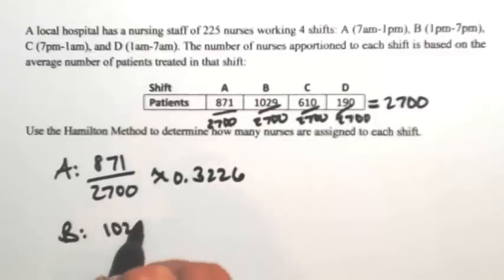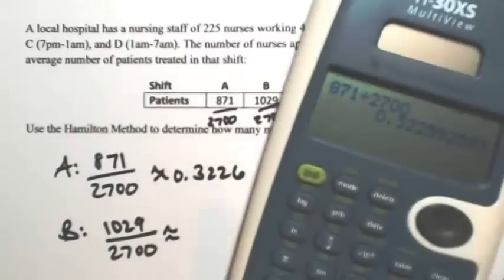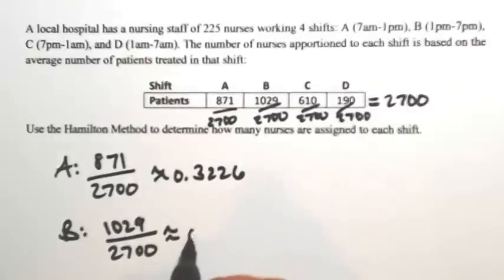1,029 over 2,700 for shift B is about 0.3811, so about 38 percent.